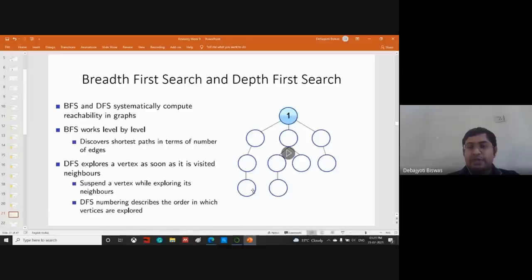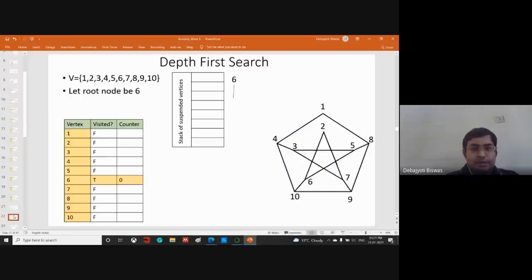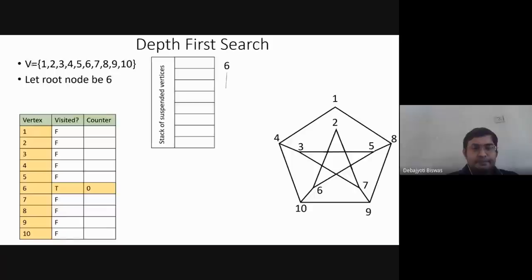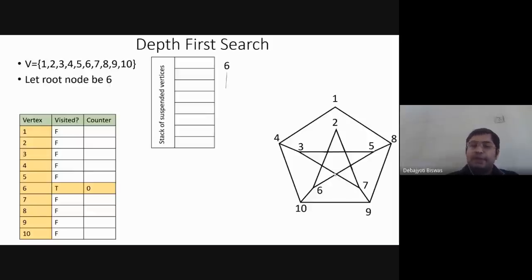We will now apply DFS to the same pentagon-star graph we used for BFS, making a DFS tree. Six is again the root node. One key difference between BFS and DFS: BFS uses a queue (FIFO), whereas DFS uses a stack.